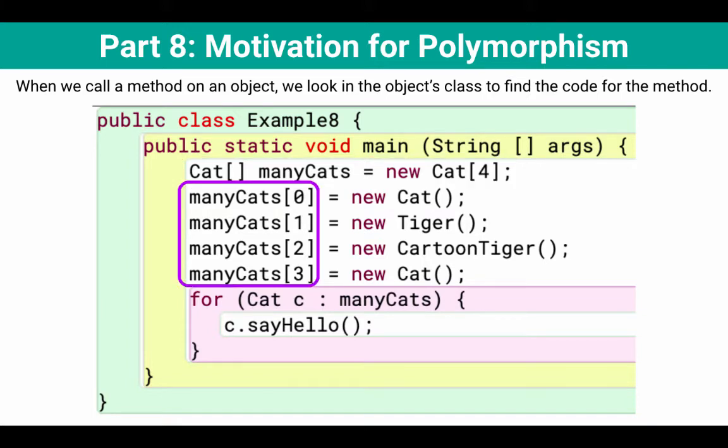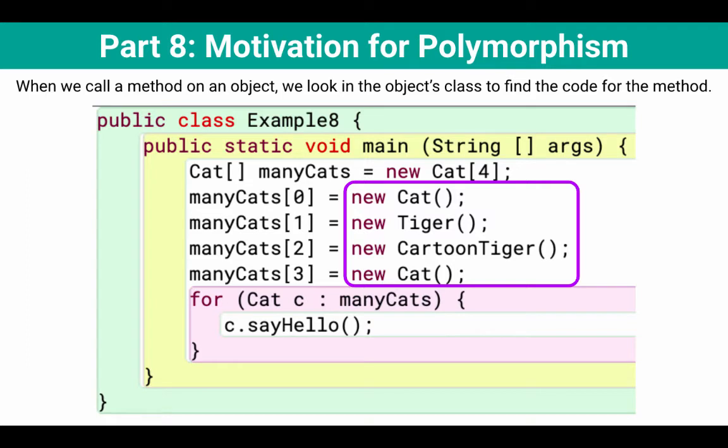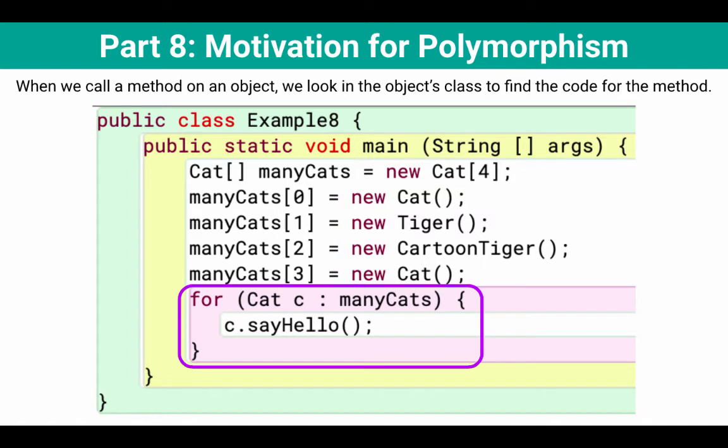Okay, then we see that we're setting the value at many cats at index zero, one, two, and three. And then on the right hand side, you can see that we're setting it to a new cat, a new tiger, a new cartoon tiger, and a new cat again. Then at the bottom, we're looping through the array. So it's going to go through the many cats array one by one, and it'll make a copy of whatever reference is in there and refer to it with C. And then it'll call the say hello method on it.